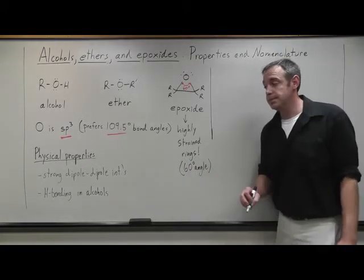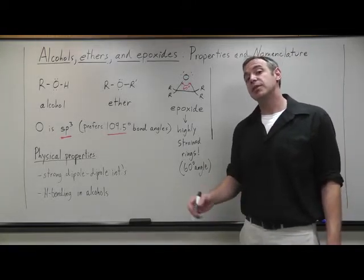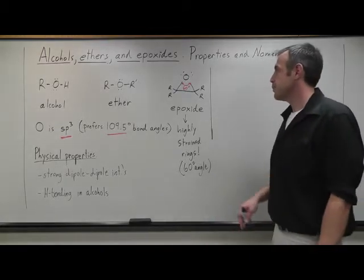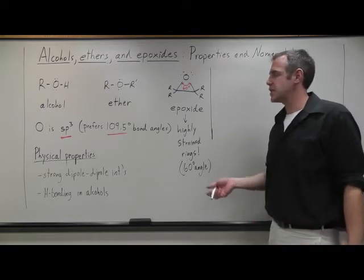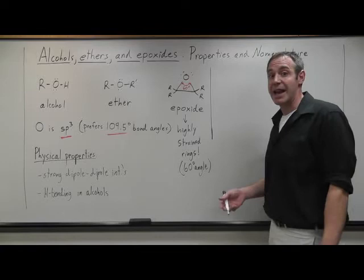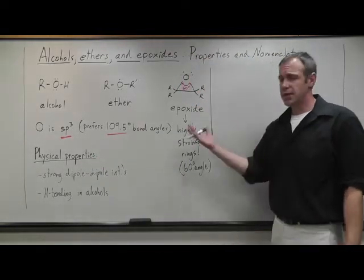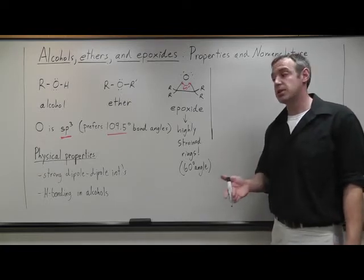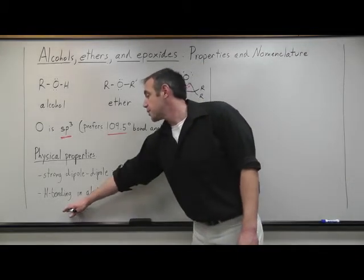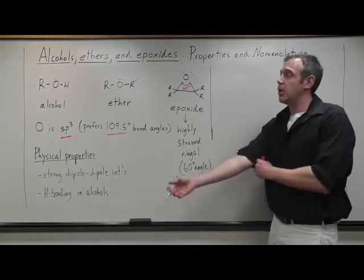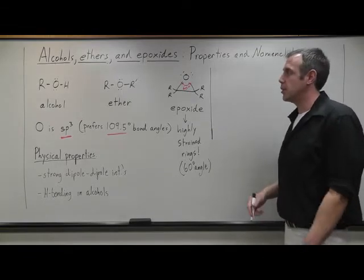And so with epoxides, this is a special case that will give them special reactivity that we'll investigate later in this chapter. And this is similar to what we saw with cyclopropane rings where that ring structure is not very stable due to that ring strain or that angle strain. In terms of physical properties, all of these are going to have strong dipole-dipole type interactions because of the very polar carbon-oxygen bond, but of course also you'll have hydrogen bonding prevalent with alcohols due to the OH bond as a protic bond or protic molecule.